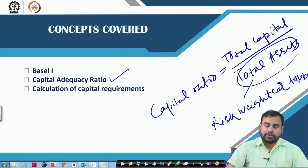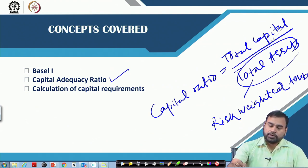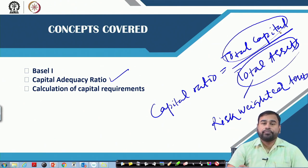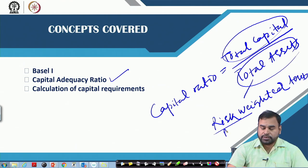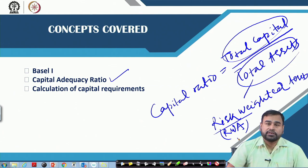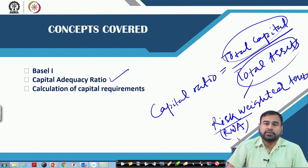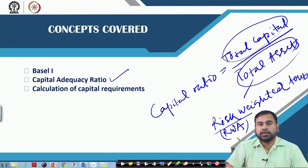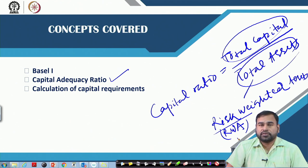There are two things: the numerator, which is total capital, and the denominator, which is risk-weighted assets, or in short, RWA. The questions that always arise are: on the basis of what type of risk should the weight be given, and what are the typical components of capital — these are the questions we face when discussing the regulatory capital adequacy ratio.